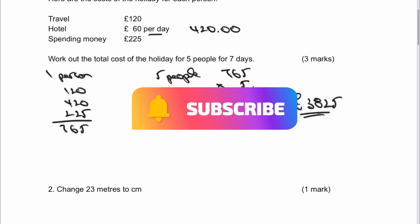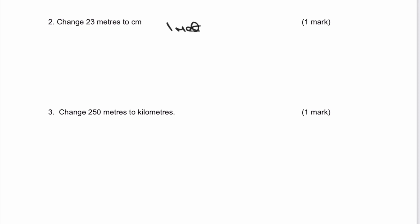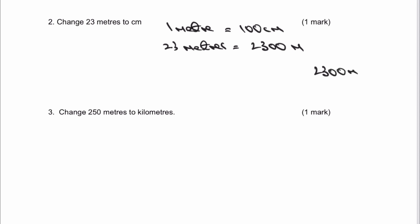Question 2: change 23 metres to centimetres. In 1 metre there are 100 centimetres, so 1 metre equals 100 centimetres. I've got 23 metres, so I multiply by 23, and that gives me 2,300 centimetres. That's the answer to question 2.